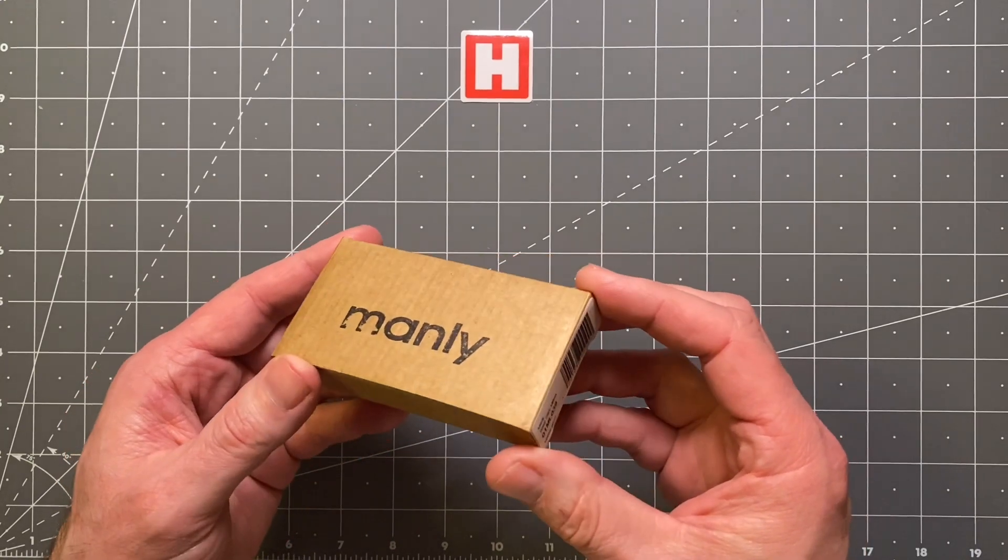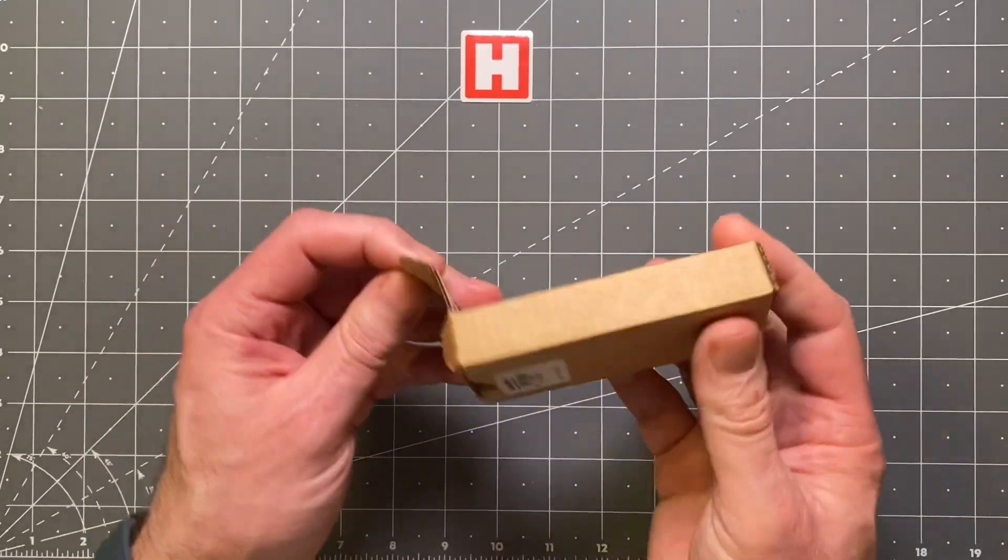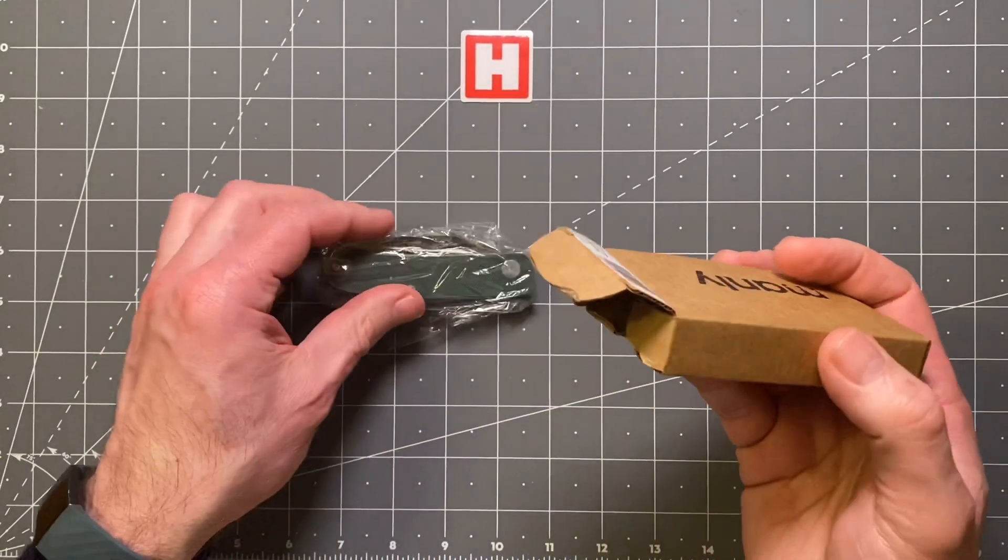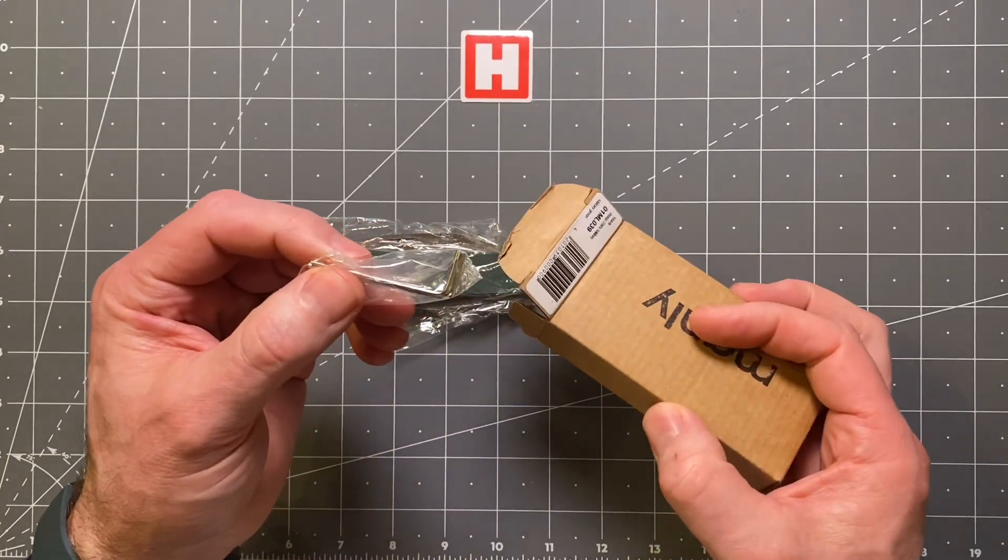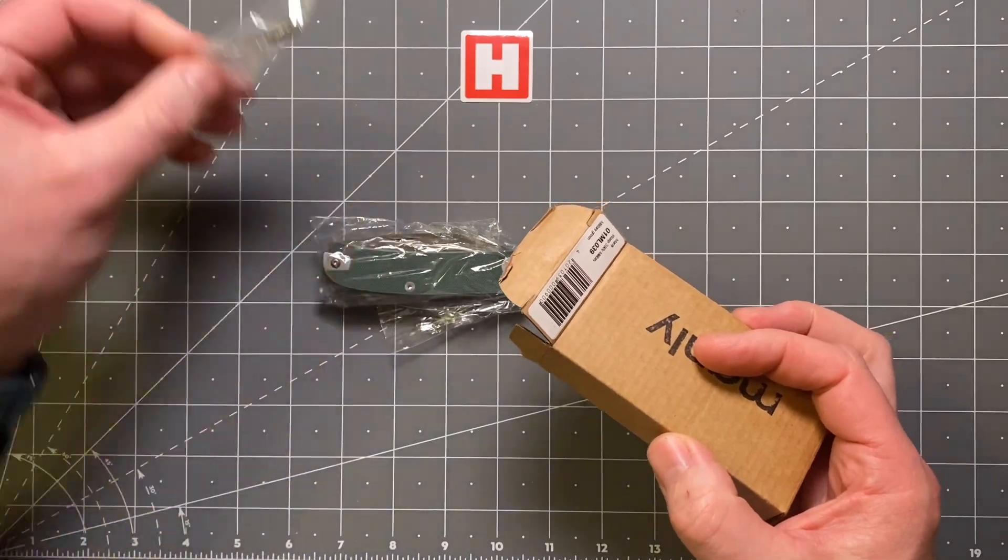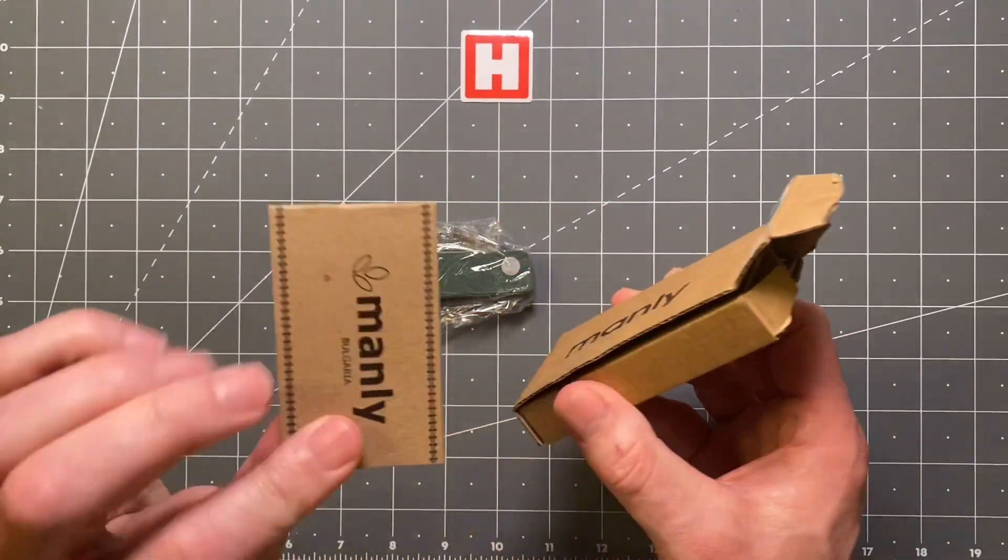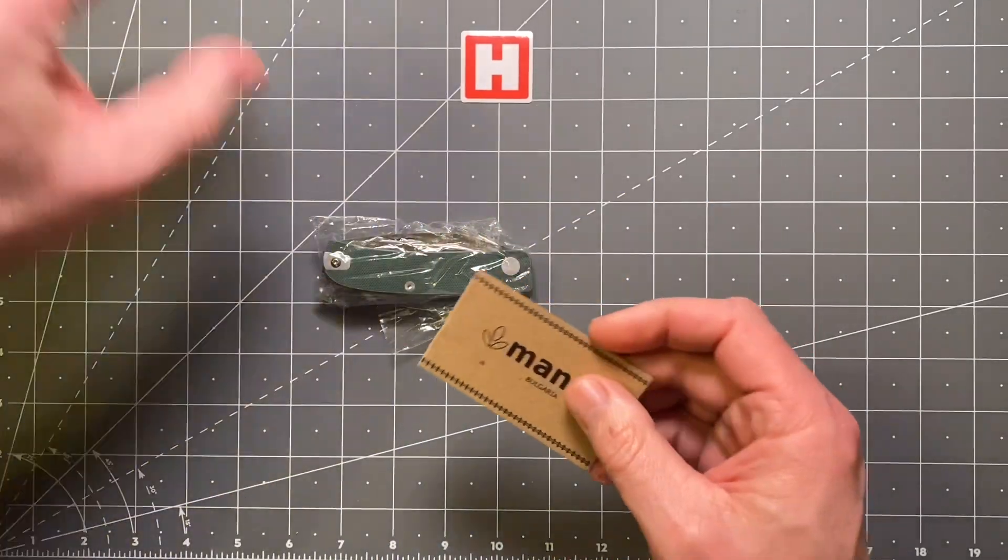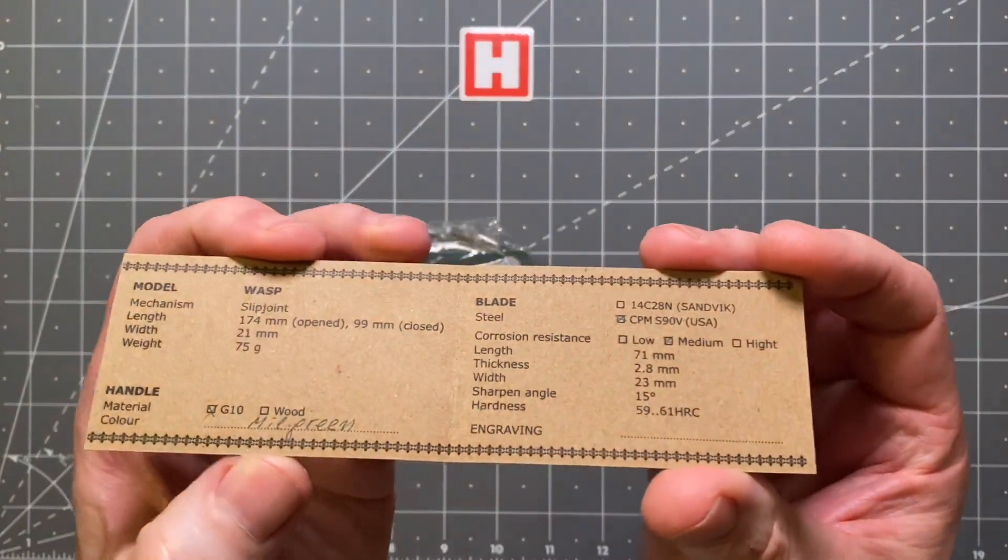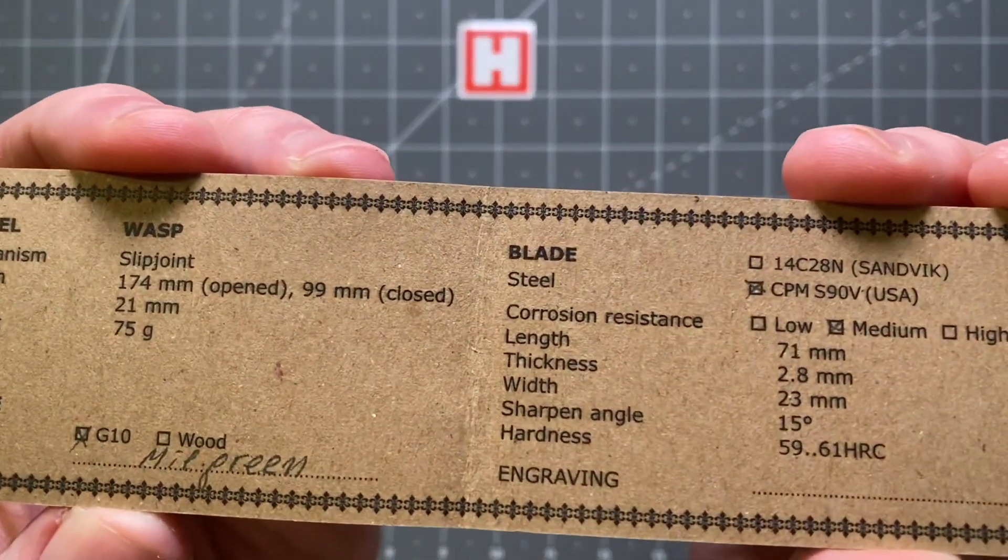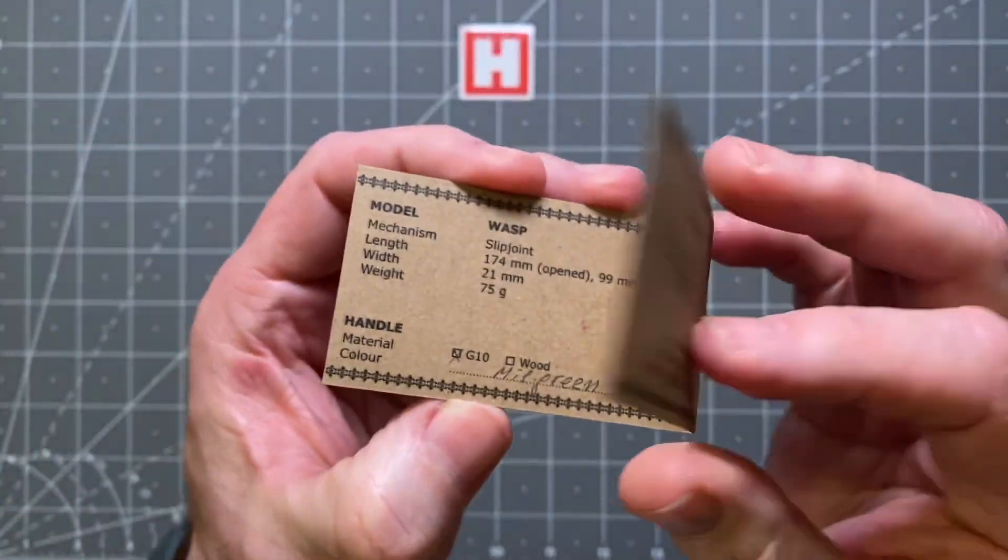It comes in a nice, reasonably nice minimalist looking sustainable cardboard box. Compared to some brands it's not too bad. There she is. You've got a couple of Allen key tools for service and maintenance, and then you've also got the little slip in there for instructions. I'll give you a little close-up of that so you can see all the dimensions and weights and the warranty on the back.